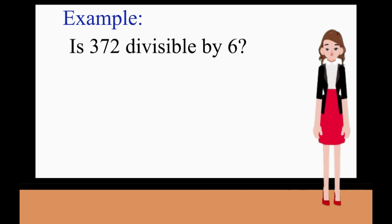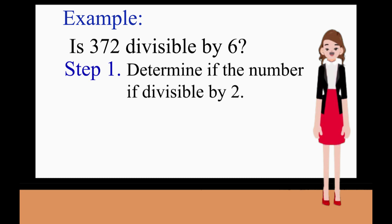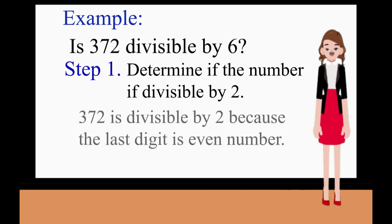Example: Is 372 divisible by 6? What are the steps in determining whether the number is divisible by 6? The first step is we have to determine if the number is divisible by 2. Remember that for a number to be divisible by 2, its last digit should be an even number: 0, 2, 4, 6, and 8. So in this case, 372 is divisible by 2 because the last digit is an even number.